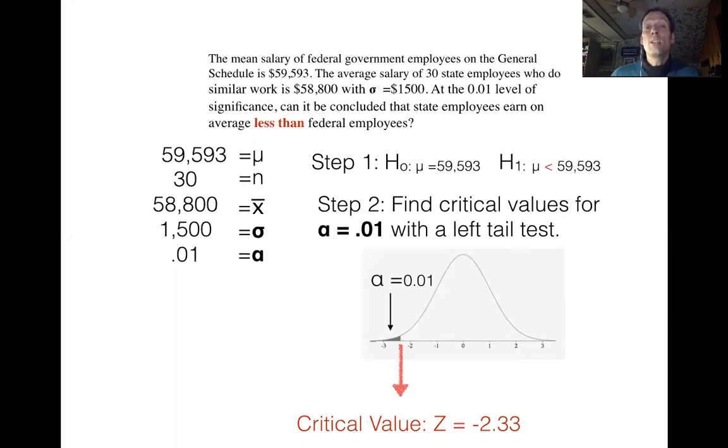So we have to figure out, is $58,800 significantly less than $59,593? If that's true, that means that if you're a state employee, you might want to look for the same kind of work but for the federal government because you're going to be making more money. And if the reverse is true, if $58,800 is not significantly less than $59,593, we can say that the discrepancy was just merely due to sampling error. So key words in the question were 'less than,' which alerted us to doing a left tail test. For step one, we stated that we believed mu for a null hypothesis was equal to $59,593. Alternative hypothesis, mu is less than $59,593.